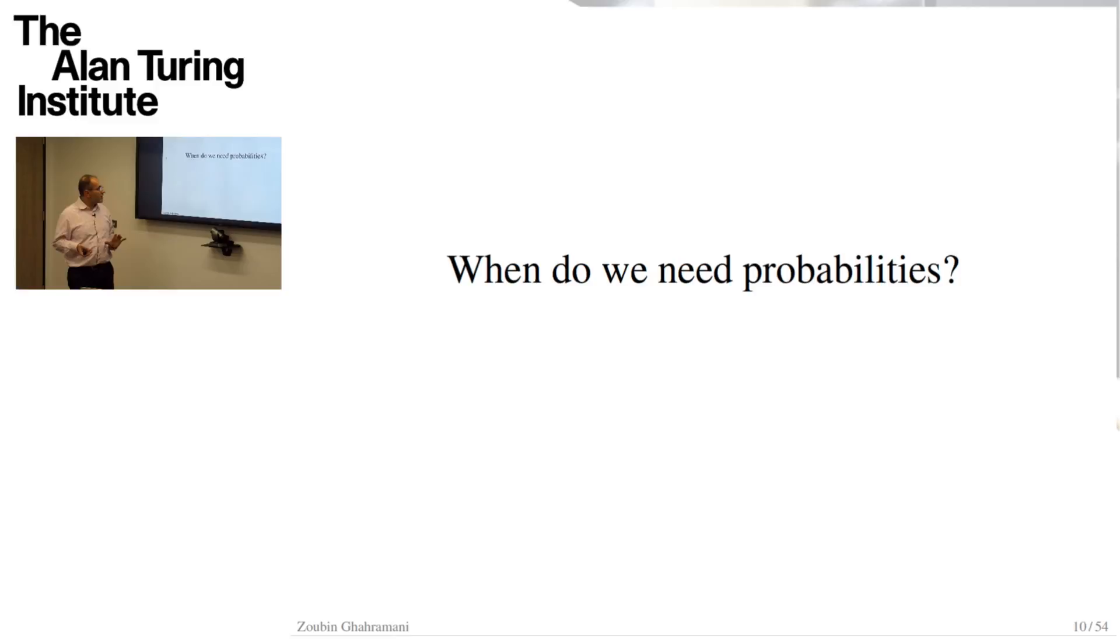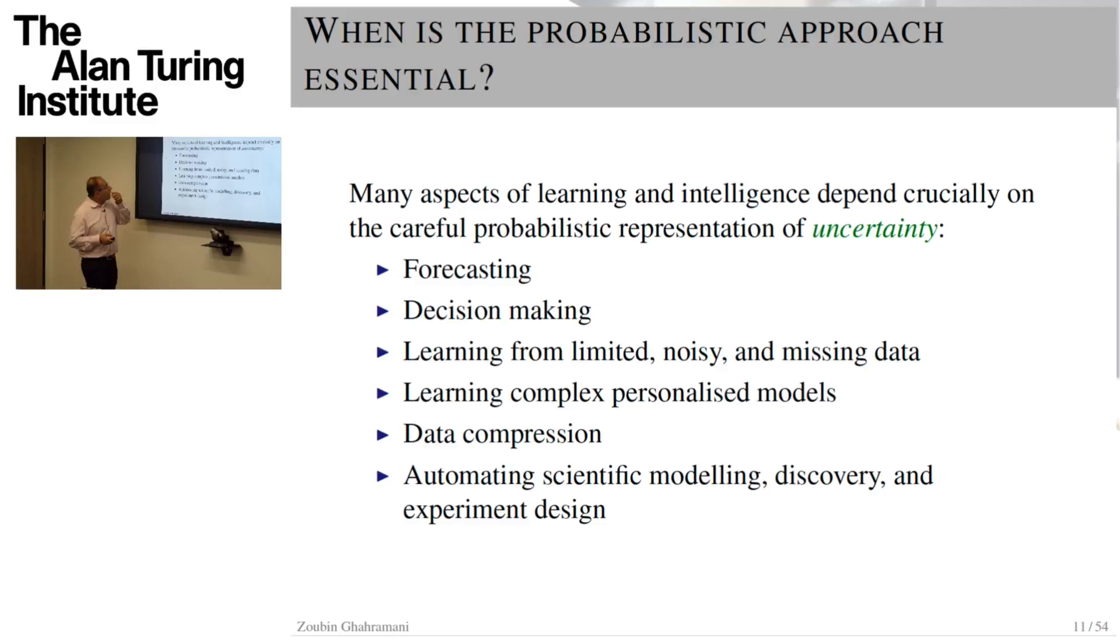So why do we need probabilities? A lot of machine learning research these days seems to be done without really using much probability theory. For example, famously neural networks. The papers don't really talk about this probabilistic framework very much, but they're incredibly successful. Well, I would argue that this probabilistic approach is essential for problems where you need to represent uncertainty. What are those kinds of problems? They're problems like forecasting, decision-making, learning from limited, noisy, and missing data, learning complex personalized models. The whole field of data compression is all about probabilistic models and uncertainty. And the thing that I'm very interested in, this automating scientific modeling discovery and experiment design is all about uncertainty.